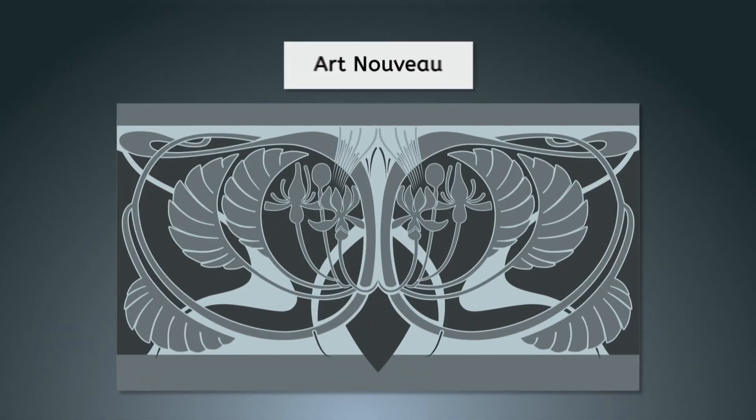Their versatility and natural appeal have made them a favorite among artists. Some art movements where they take center stage include Art Nouveau. Organic shapes were heavily used in the Art Nouveau movement, which was popular in the late 19th and early 20th centuries. This movement was characterized by flowing, sinuous lines and intricate designs inspired by nature. The organic shapes used in Art Nouveau often included stylized floral motifs, leaves, and vines.